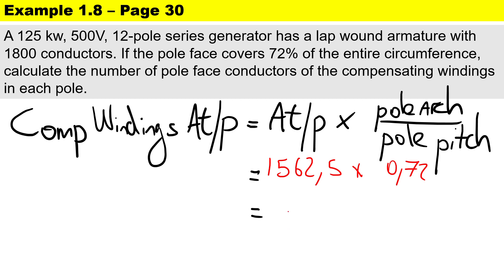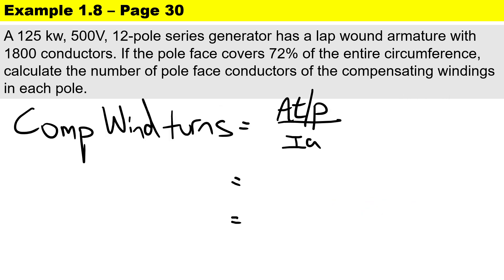Now we want to calculate the compensating winding turns per pole. To do this we need to eliminate the armature current, so we take the compensating winding ampere turns per pole, which is 1125, divided by the armature current of 250. We end up with 4.5 compensating winding turns per pole.